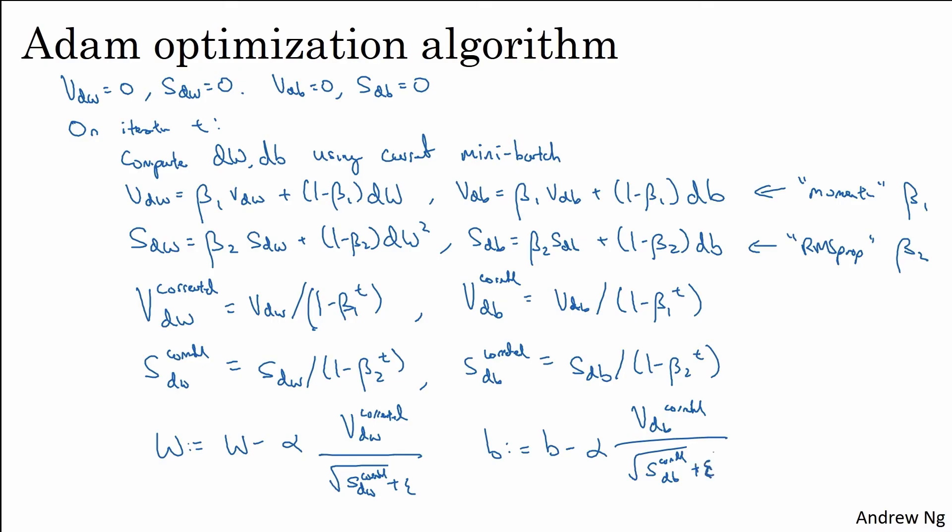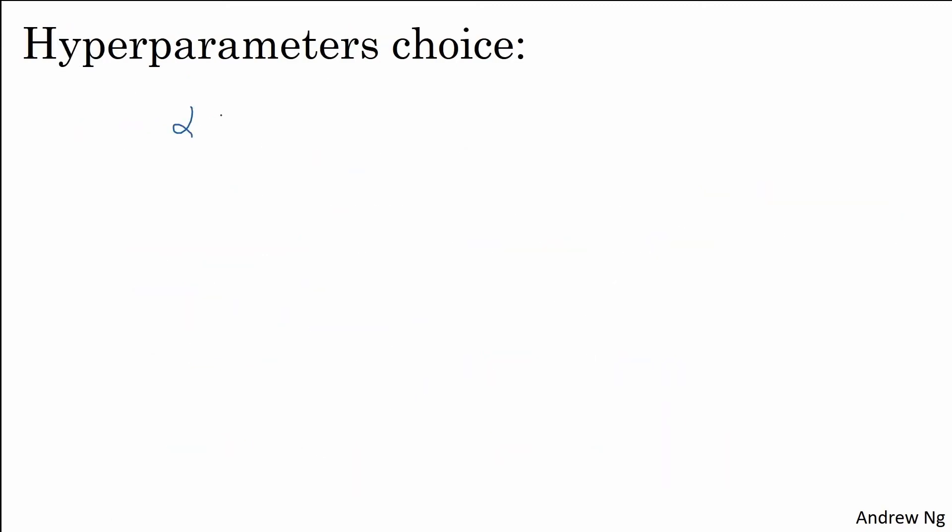And so this algorithm combines the effect of gradient descent with momentum together with gradient descent with RMSprop. And this is a commonly used learning algorithm that's proven to be very effective for many different neural networks of a very wide variety of architectures. So this algorithm has a number of hyperparameters. The learning rate hyperparameter alpha is still important and usually needs to be tuned. So you just have to try a range of values and see what works.